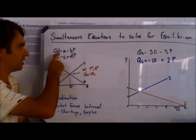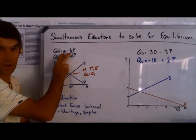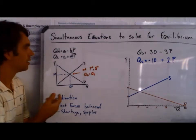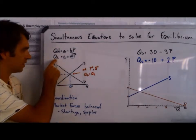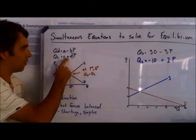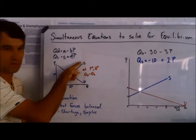Our demand function is qd equals a minus bp. Remember, a and b are variables, and what we care about are quantity demanded at various prices. Our supply function is qs equals c plus dp. And remember, the plus and the minus means a negatively sloped curve or a positively sloped curve.